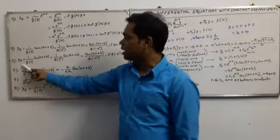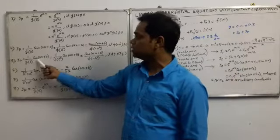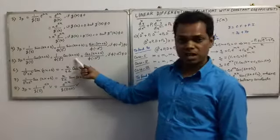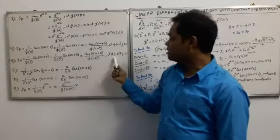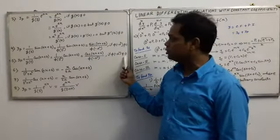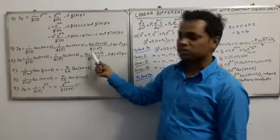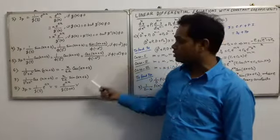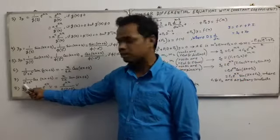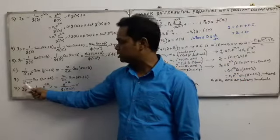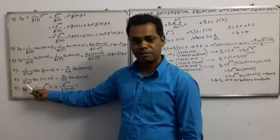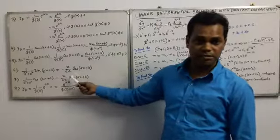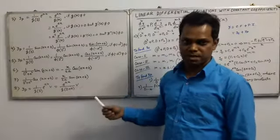In the next formula: yp = 1/g(D) * cos(ax + b) = 1/φ(D^2) * cos(ax + b). If φ(-a^2) ≠ 0, then we use: cos(ax + b) / φ(-a^2). If φ(-a^2) = 0, then we use the special formula where D^2 is replaced, giving x/(2a) * sin(ax + b).